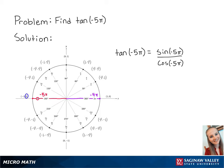Sine correlates to the y-coordinate on the unit circle, so sine of negative 5 pi is equal to 0.